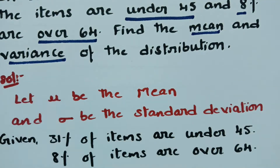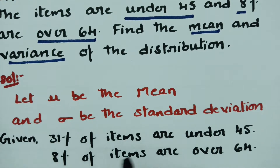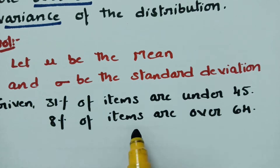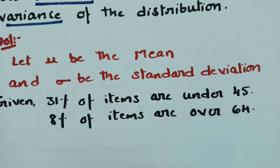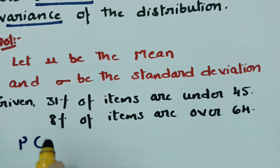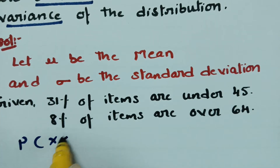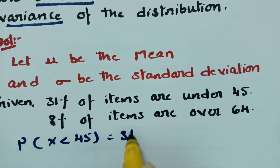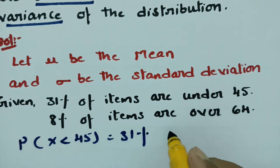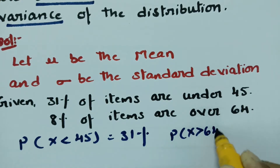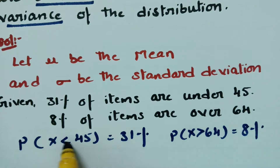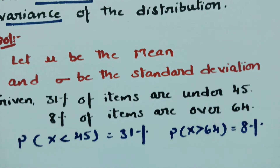Sigma squared is the variance. What is given: P(X < 45) = 31% and P(X > 64) = 8%. So the first is a less-than condition and the second is a greater-than condition, and now we have to plot this using the normal distribution curve.